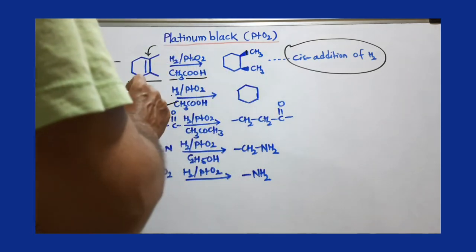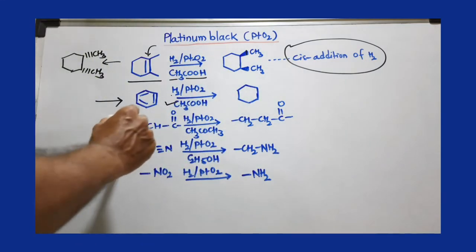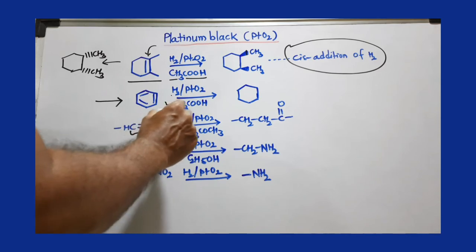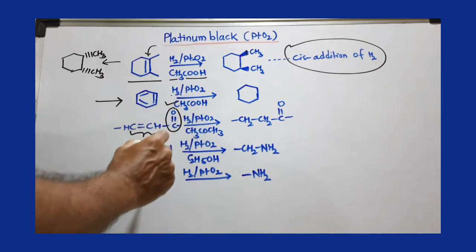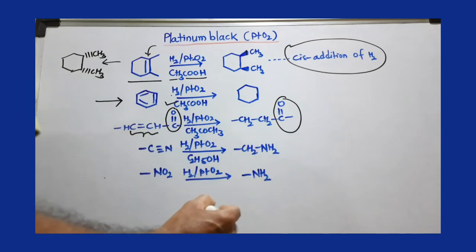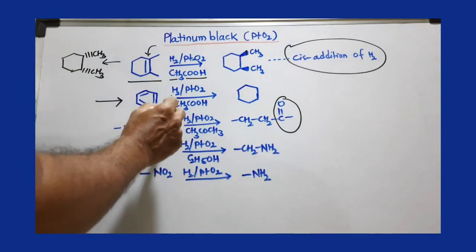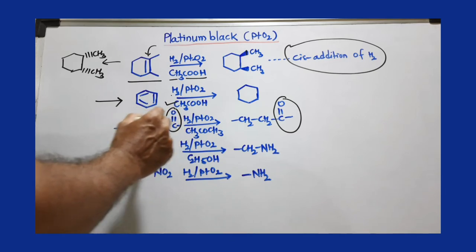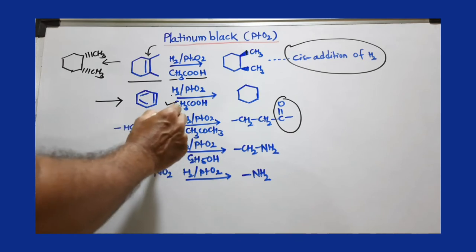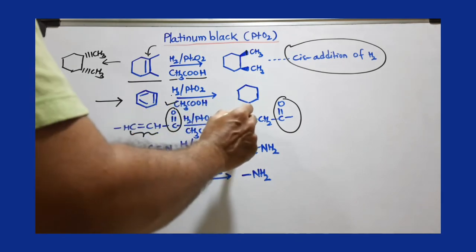Now here, an olefinic double bond is there and this carbonyl group is also there. But if this carbonyl group remains as it is, only the olefinic double bond is selected over the carbonyl group. That's why two hydrogens are added on the carbon-carbon double bond, not on the carbon-oxygen double bond. In this way, this group is converted to CH2-CH2.